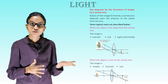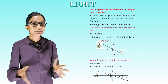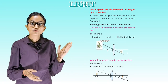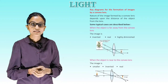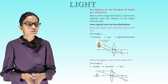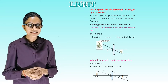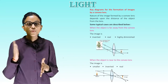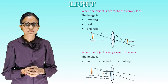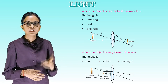Ray diagrams for the formation of images by a convex lens: the nature of the image formed depends upon the distance of the object from the lens. When the object is far away from the convex lens, the image is inverted, real, and highly diminished. When the object is near to the convex lens, the image is smaller, inverted and real. When the object is nearer to the convex lens, the image is inverted, real and enlarged.